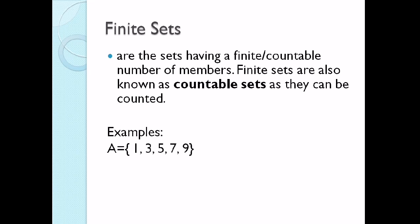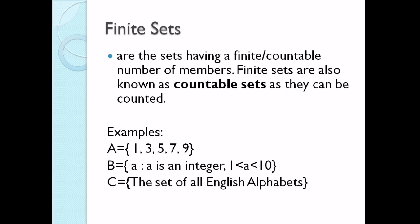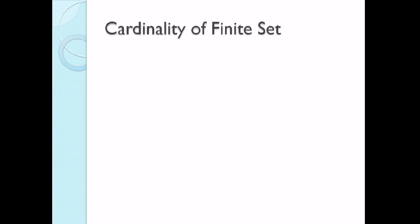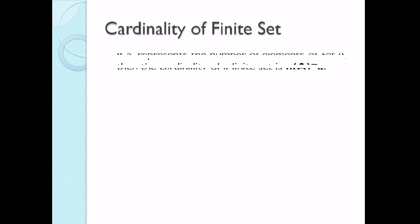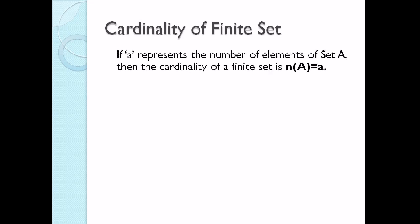Examples: Set A = {1, 3, 5, 7, 9}. Set B = the set of all A such that A is an integer, where A is greater than 1 but less than 10. And set C = the set of all English alphabets. So these 3 examples are finite sets. So how can we get the cardinality of a finite set? If A represents the number of elements of set A, then the cardinality of a finite set is the number of elements of set A equals A.